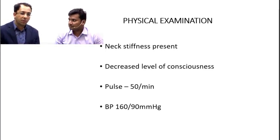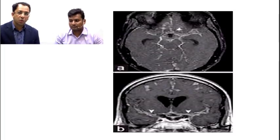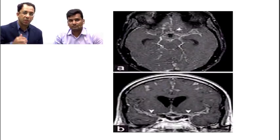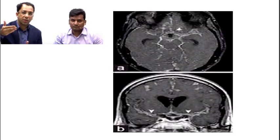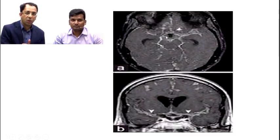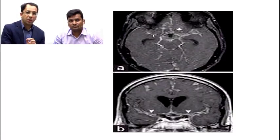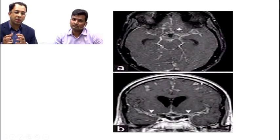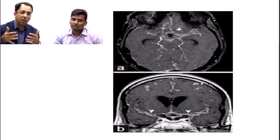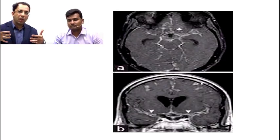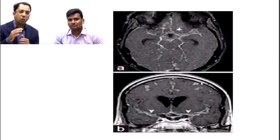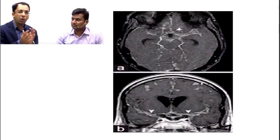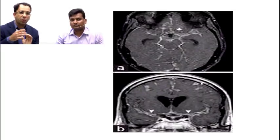On contrast-enhanced MRI — axial section on top and coronal section below — the striking feature is leptomeningeal enhancement along the circle of Willis and basal cisterns. Nodular lesions are also seen in the parenchyma, likely due to leptomeningeal enhancement spreading along perivascular spaces. Overall, the MRI is corroborative of leptomeningeal involvement.